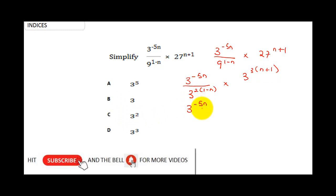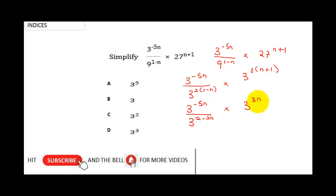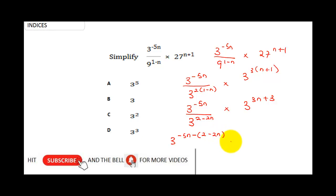Expanding the brackets: the denominator becomes 3 raised to the power (2 minus 2n), and the second factor becomes 3 raised to the power (3n plus 3). So we have 3 raised to the power minus 5n, over 3 raised to the power (2 minus 2n), times 3 raised to the power (3n plus 3).